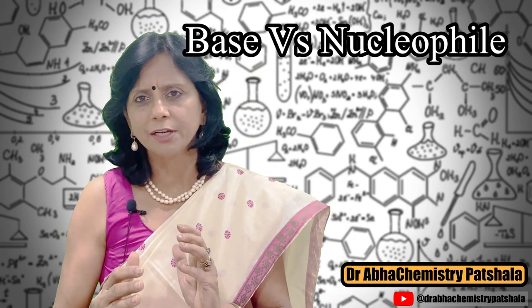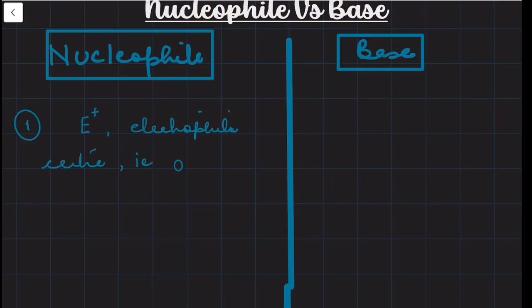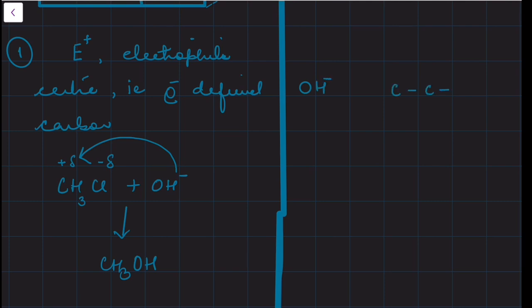A nucleophile always attacks at the electrophilic center — that is, a center which is electron deficient. Look at the example: OH⁻ is attacking on the carbon having positive charge. But if you look at the base, OH⁻ will attack on a small hydrogen atom which is attached to the carbon. Just look at the diagram here — I have taken CH₃CH₂Cl with OH⁻ acting as a base, abstracting H⁺.